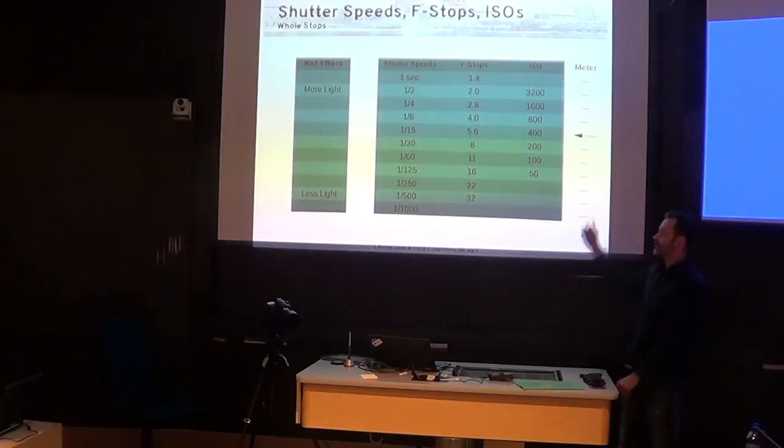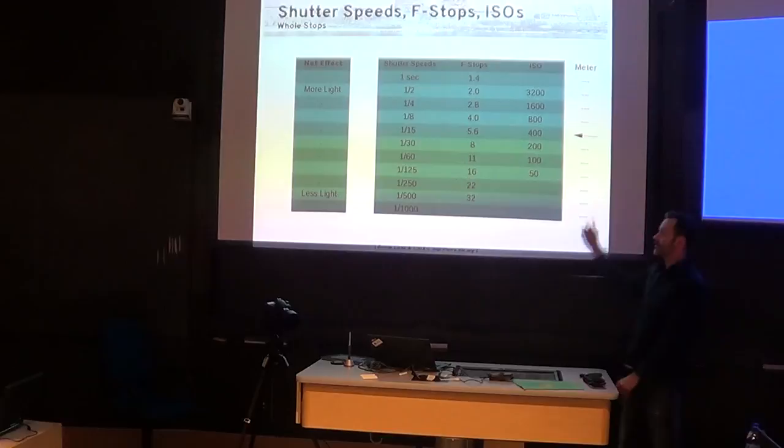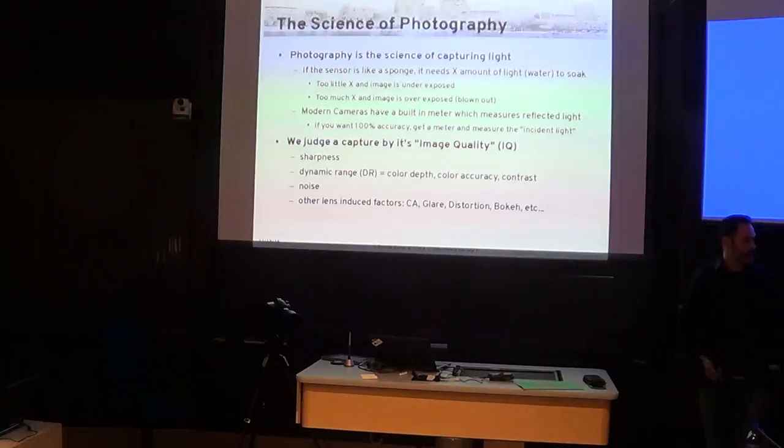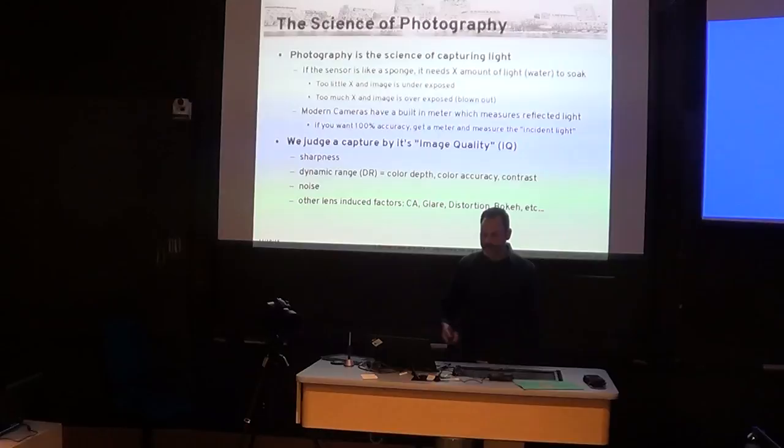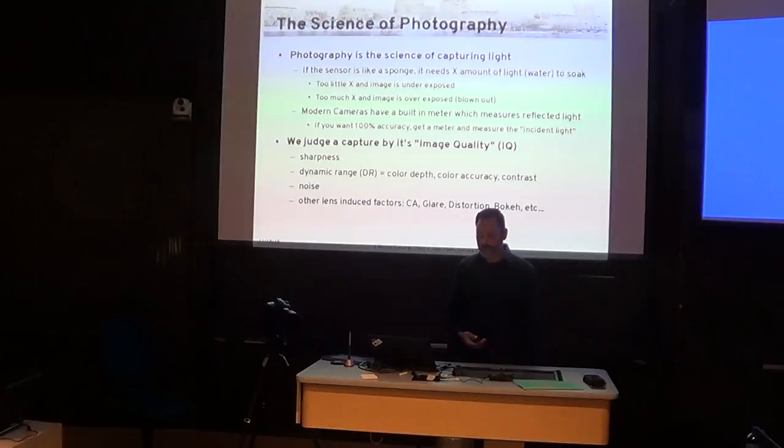As a photographer, when you're setting up to take a picture, those are the three things you're going to work on. The sensor is like a sponge — it needs a certain amount of light to make a decent picture. Too little and the image is underexposed, dark. Too much and things are blown out — things that were yellow show up white.